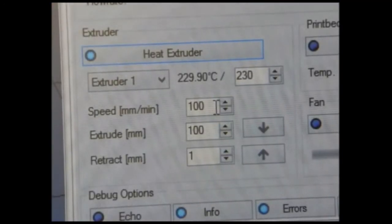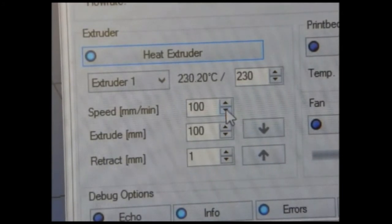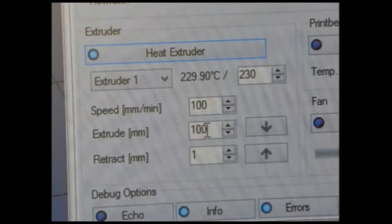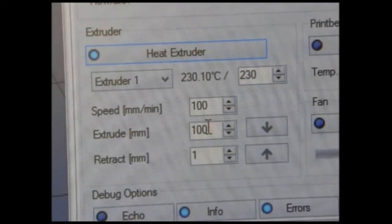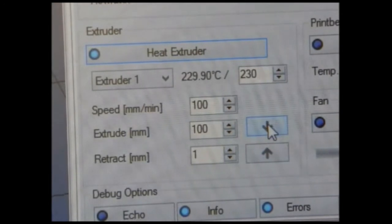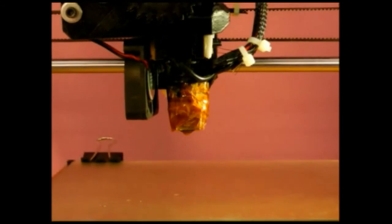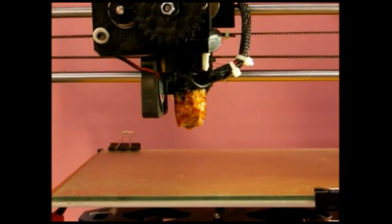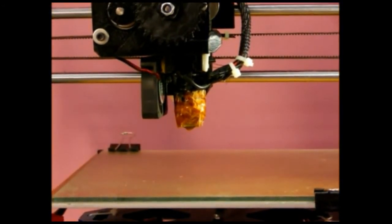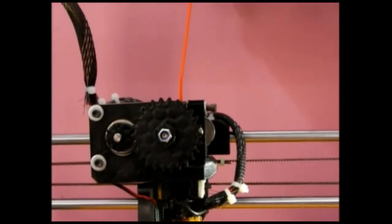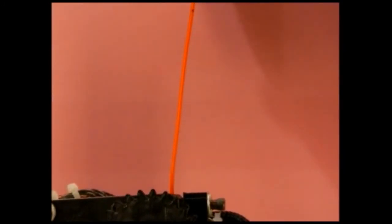Now in Repetier Host, set the speed mm per minute to 100 and extrude 100mm. Then click this extrude button. As soon as you click, the nozzle will start extruding.